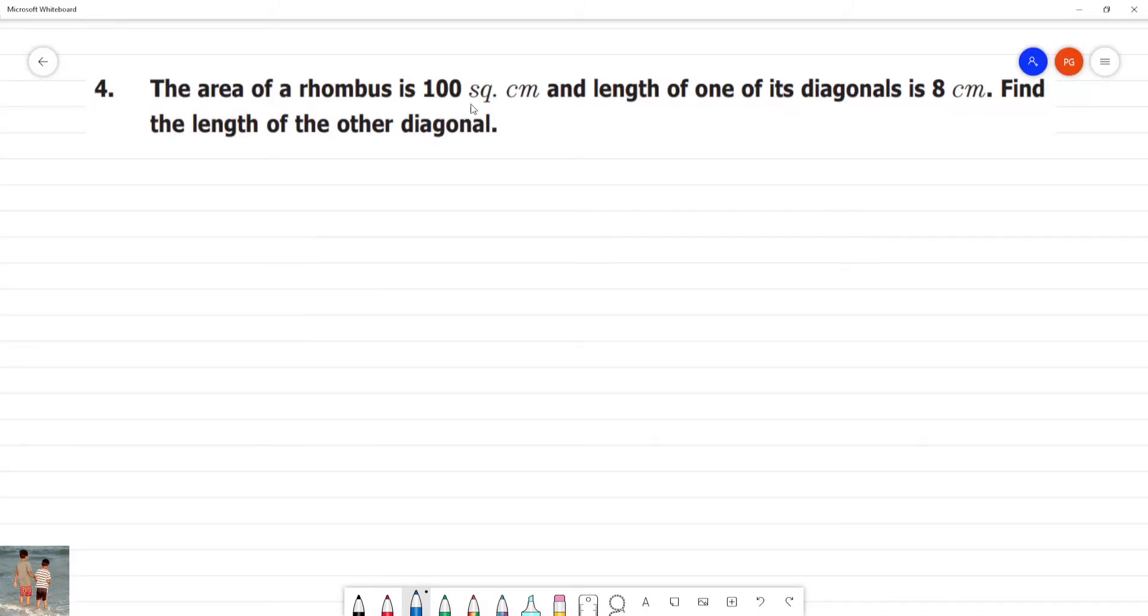The area of a rhombus is 100 square centimetre, and the length of one of its diagonals is 8 centimetre.